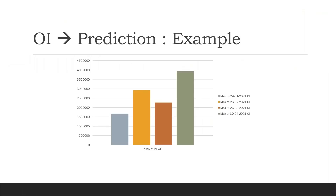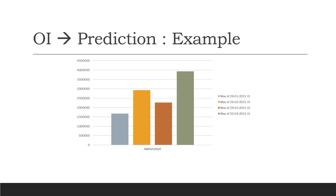Here's another example — Amara Raja Battery on 28th April before the day started. When comparing the last four months, it was a regular day for this stock, but large players had already made their position. If I called you and said the government is coming out with a PLI — Production Linked Incentive — scheme, your first reaction would be to create a position. That is exactly what happened: the PLI scheme for battery companies came just last Wednesday, but even before the series restart, large players had already positioned themselves.